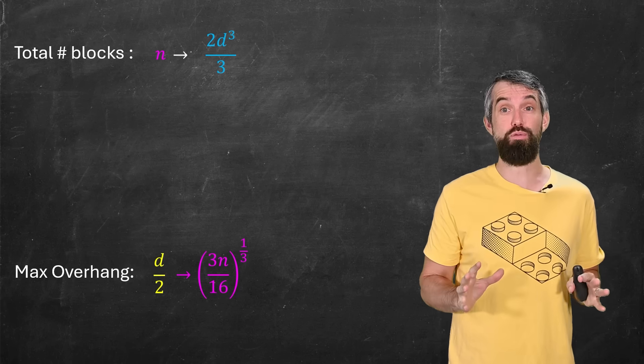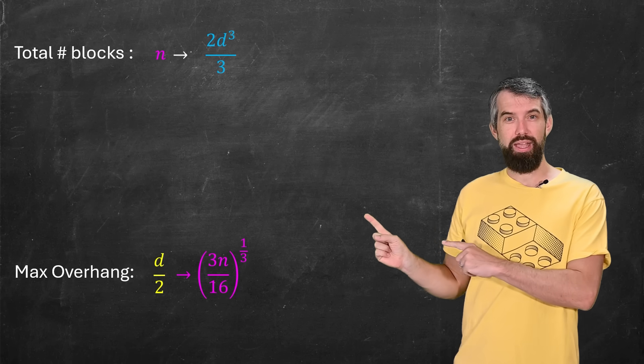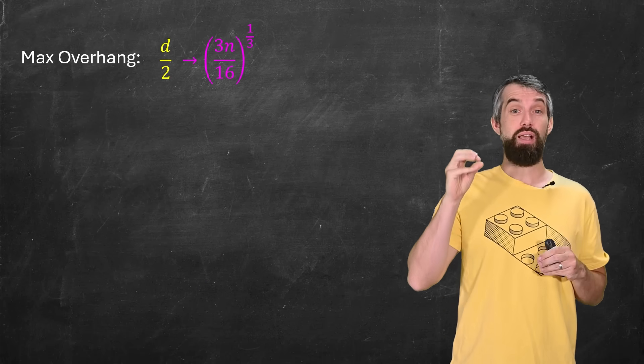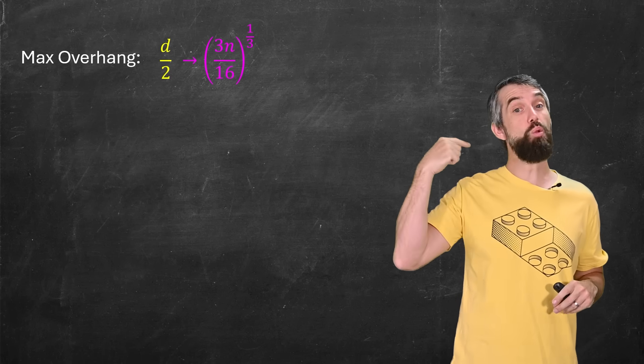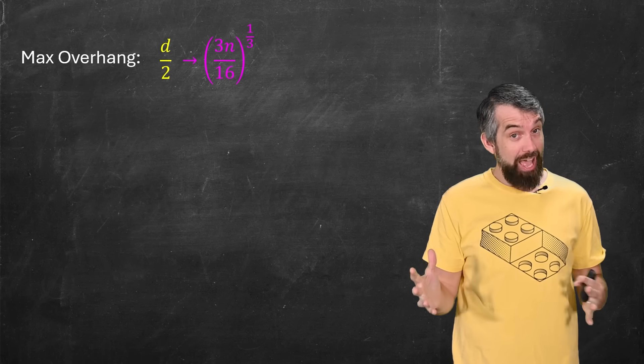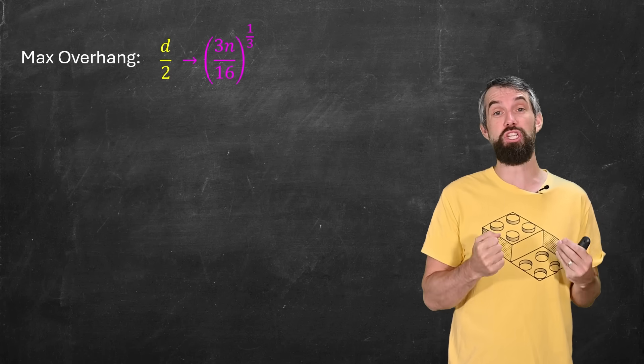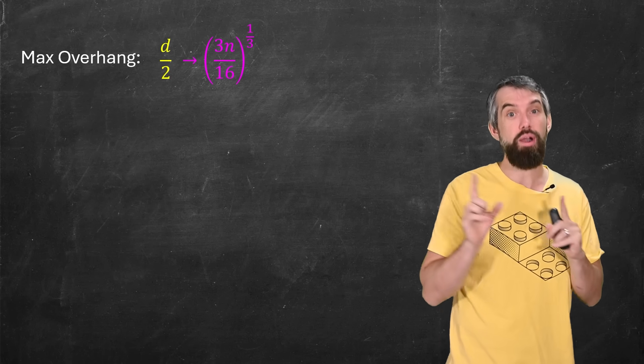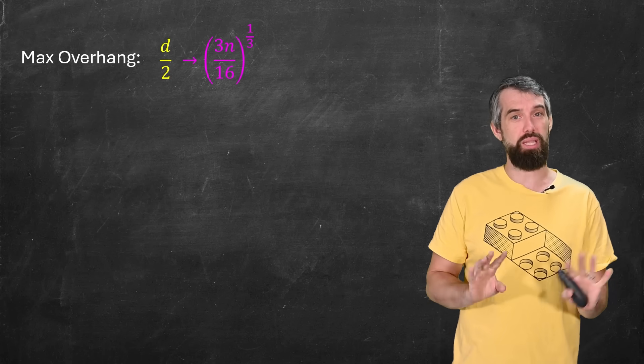And this is a huge improvement. Our overhang is no longer tending towards logarithm of N, it's tending towards, up to constants, N to the one-third. And N to the one-third grows vastly faster than logarithm. We have achieved something that's significantly better than the tower of Lyra or the spinal stacks that were basically equivalent to it.